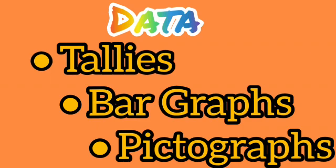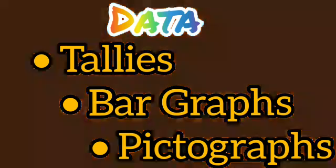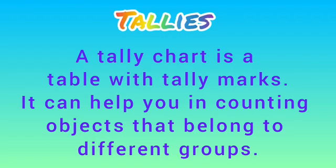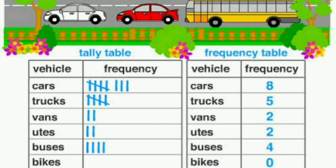Now let's see what do we mean by tallies. A tally chart is a table with tally marks. It can help you in counting objects that belong to different groups. In the coming example we can see how the tally marks are being used for each number — this is known as tally marks.